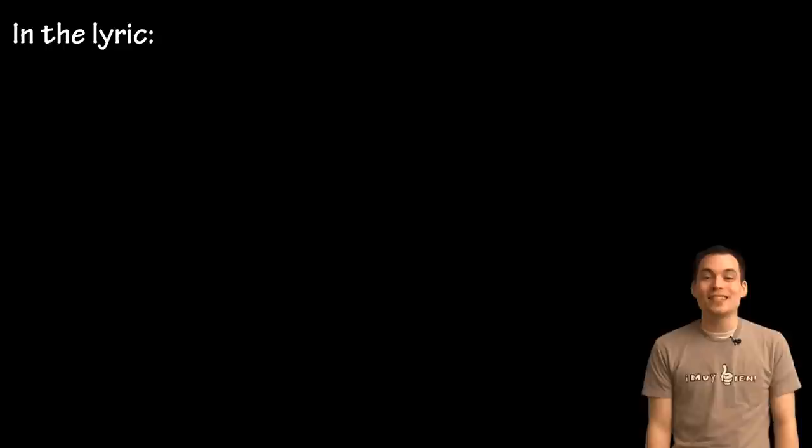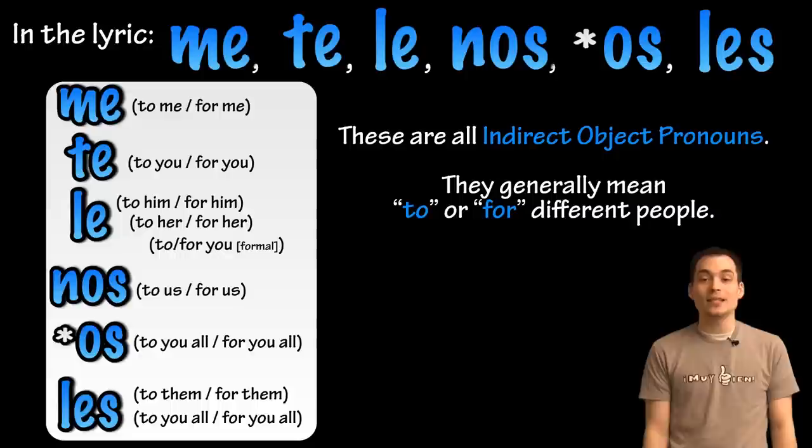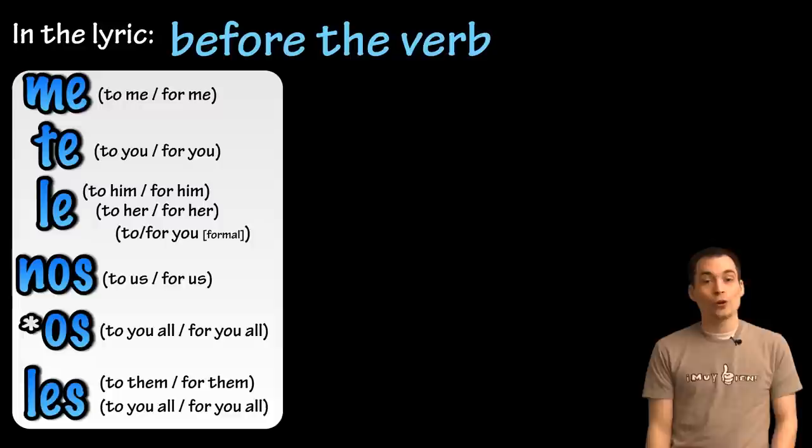Pretty simple, right? So as the song explains, me, te, le, nos, os in Spain, and les are all used to say when something is done to or for someone. The lyric 'before the verb' refers to where we usually see me, te, le, nos, les, and os in Spain — before the verb.